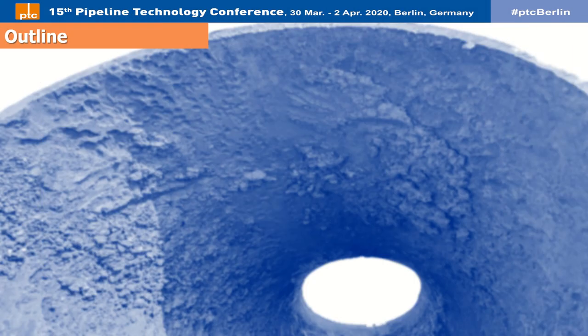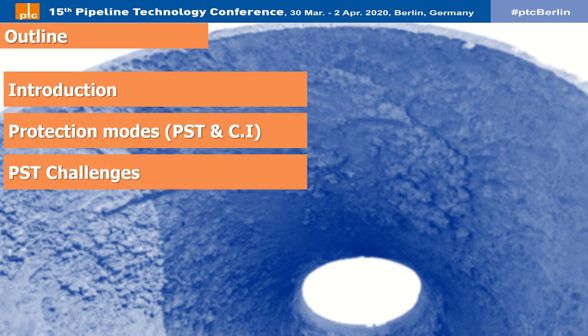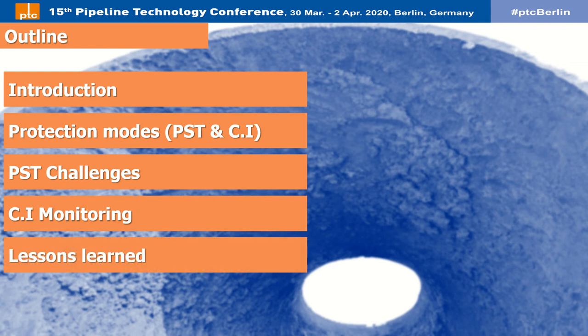In this presentation, as an outline, firstly we will look at basic concepts as introduction. Next we will discuss corrosion protection methodologies. Then we will explain what are pH stabilization challenges and corrosion inhibitor monitoring issues. Finally, we will learn their merits and shortcomings as lessons learned.